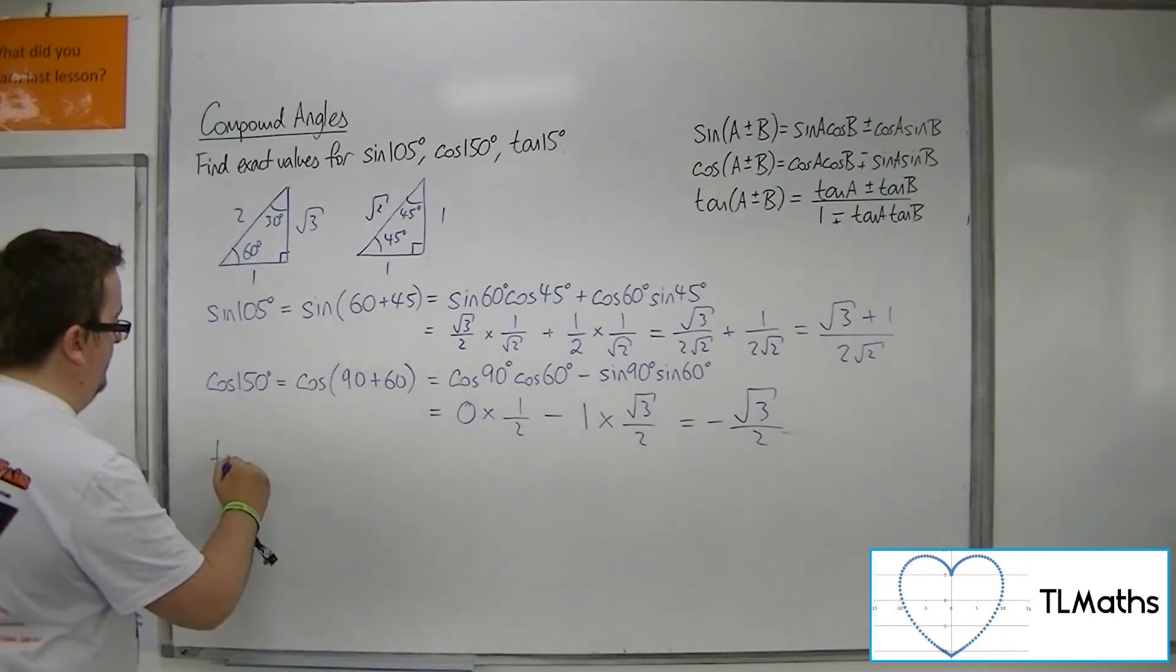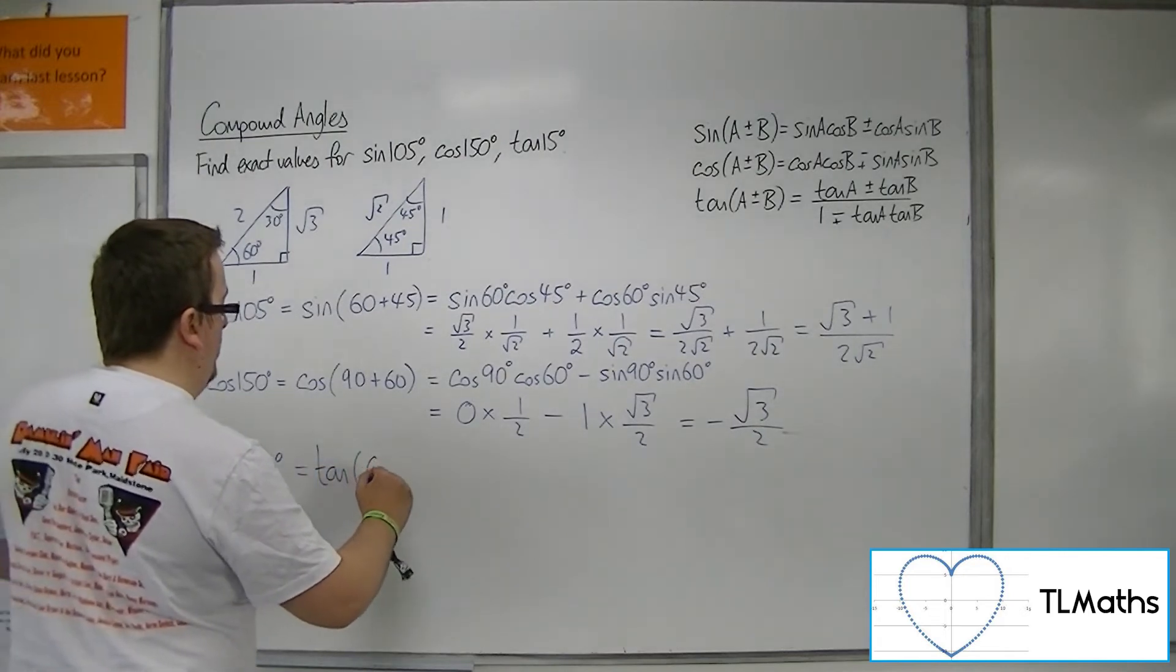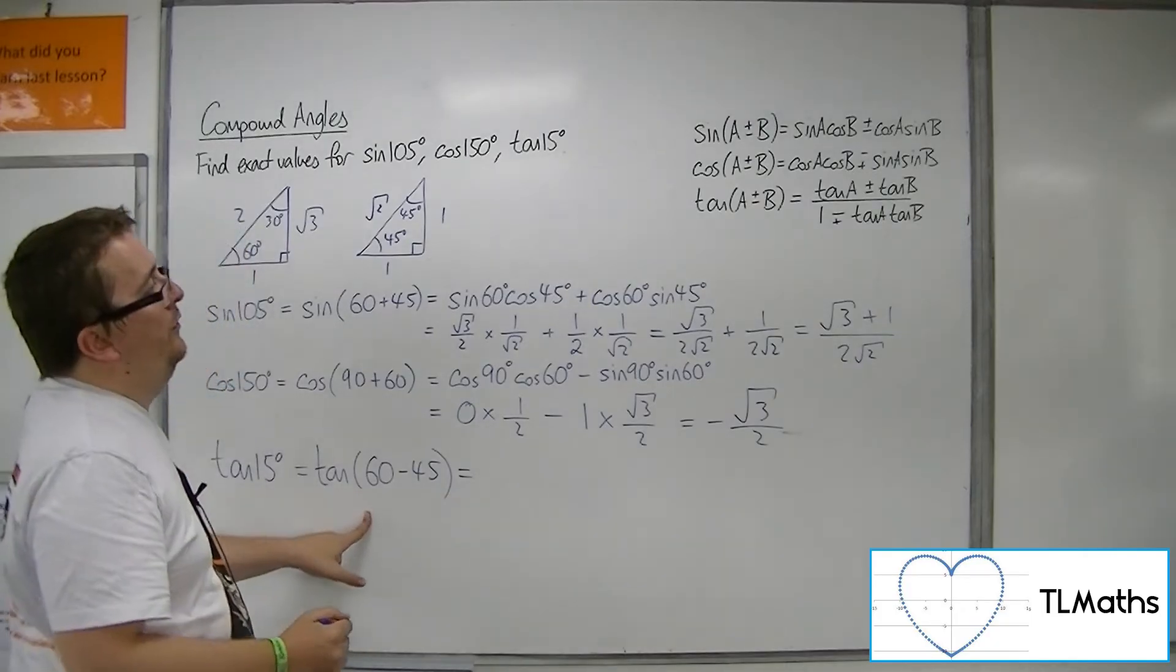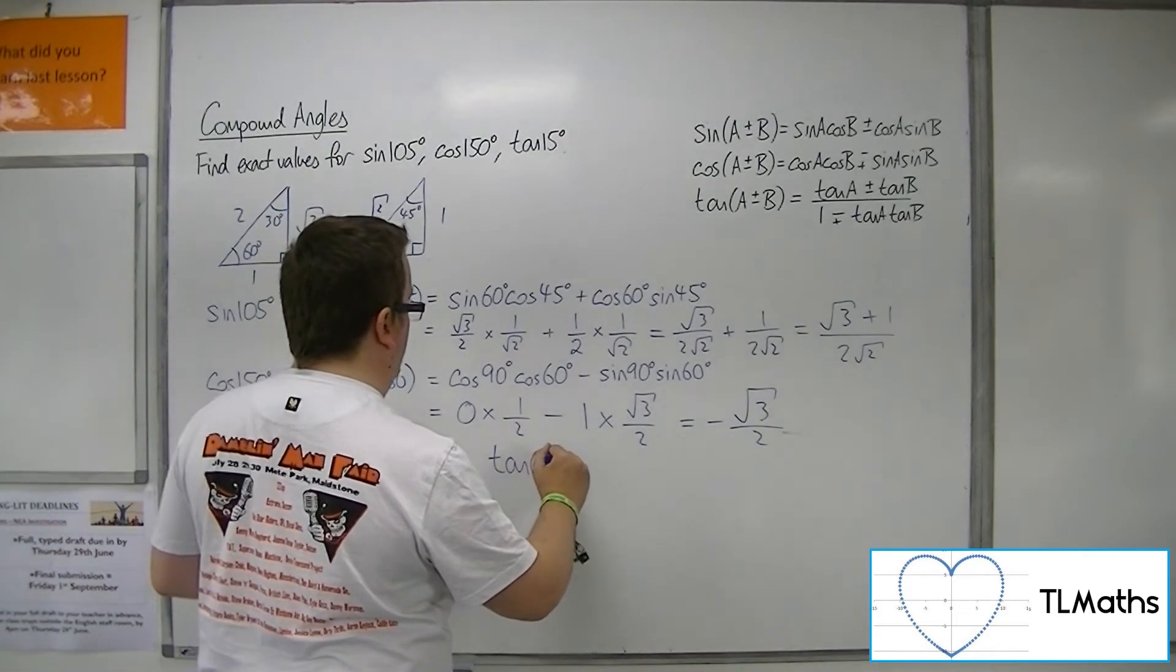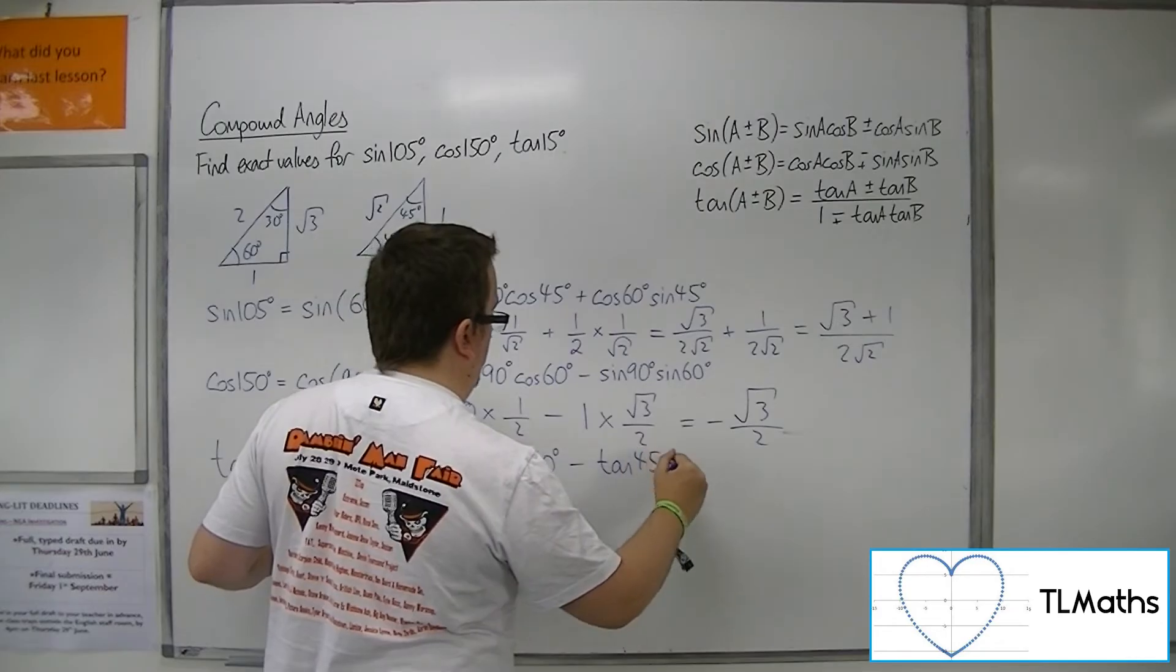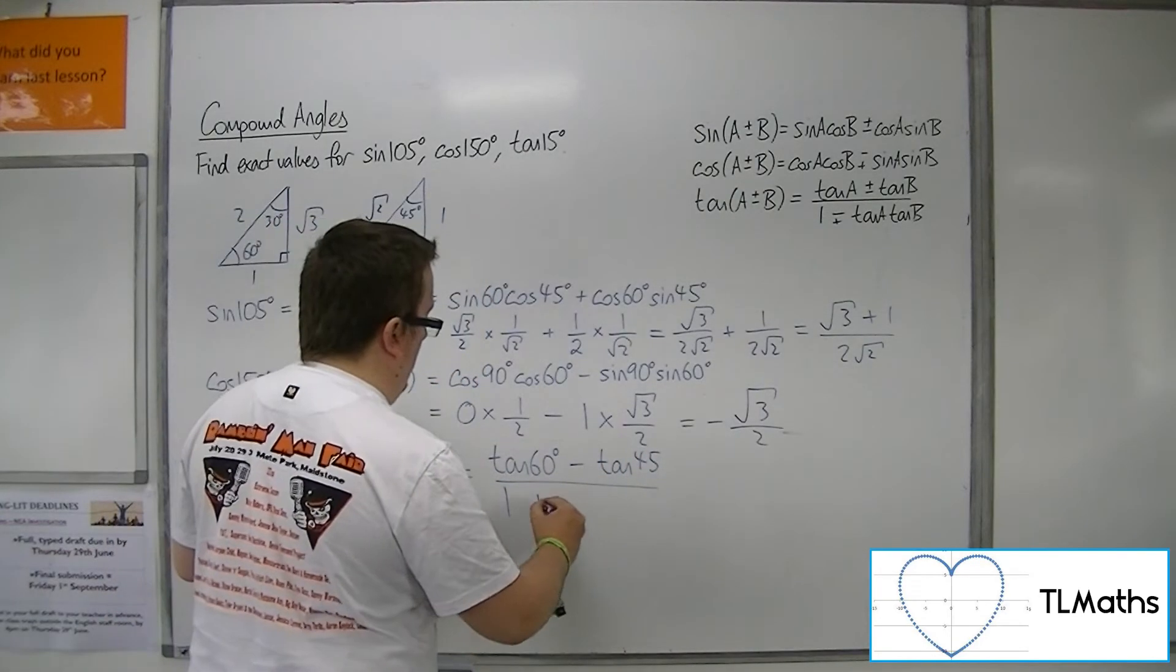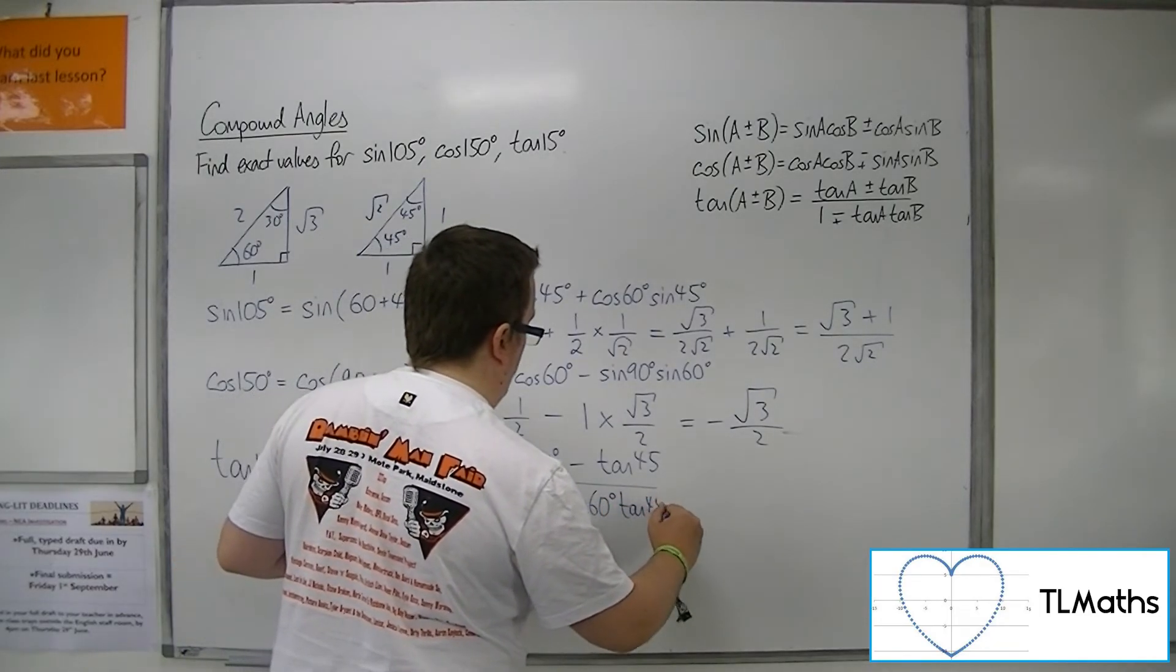Tan of 15. We can get 15 by subtracting 45 from 60. So tan of 60, because that's a minus this has to be a minus, so tan of 45, all over 1. Now because that's a minus, this is a plus: tan of 60 times tan of 45.